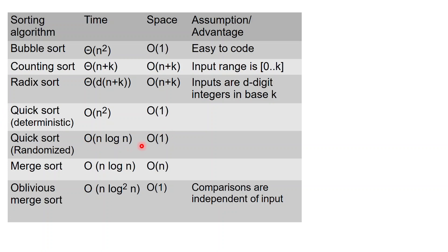If you want a deterministic algorithm with similar time, you can do merge sort, which is the first example of divide and conquer we saw. This takes time O(n log n), but the space is now linear. Finally, we saw oblivious merge sort. This takes a little bit more time than merge sort — O(n log² n) — but the space is only constant. Another advantage is that the comparisons are independent of the input, so this is useful if you want to sort with a non-programmable piece of hardware.